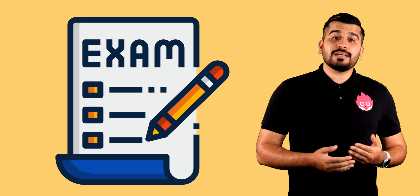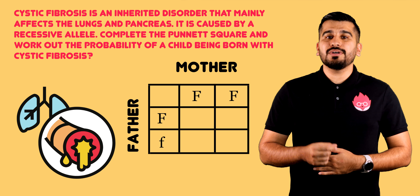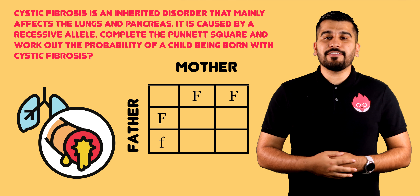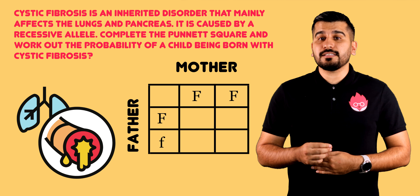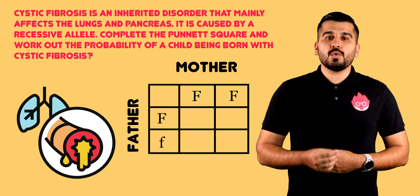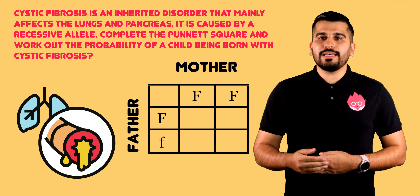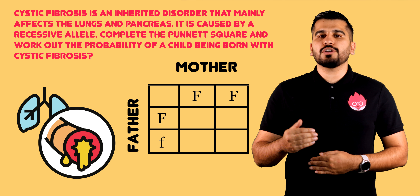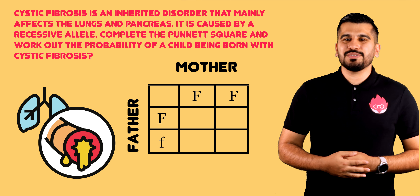Let's look at an exam style question. In this example, cystic fibrosis is an inherited disorder that mainly affects the lungs and the pancreas. It is caused by a recessive allele. Complete the Punnett square and write down the probability a child is born with cystic fibrosis.